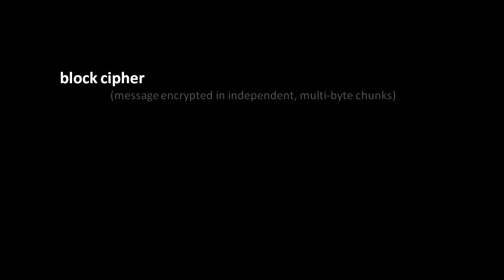In contrast to stream ciphers, we have block ciphers which encrypt messages in fixed-size chunks, and these chunks are encrypted independently. So, in fact, if you have two chunks in your plaintext which have identical content, the ciphertext for those chunks encrypted with the same key will be identical.